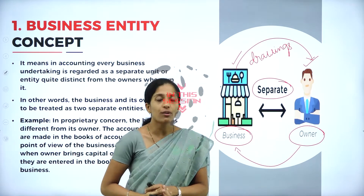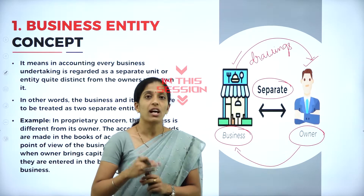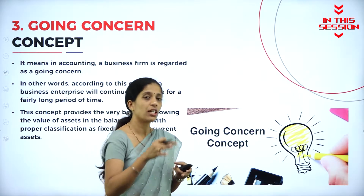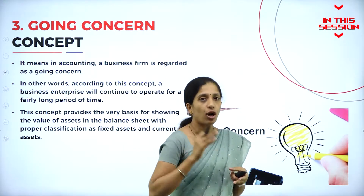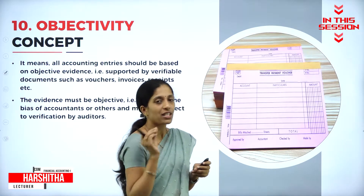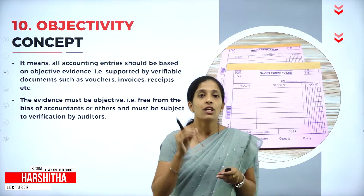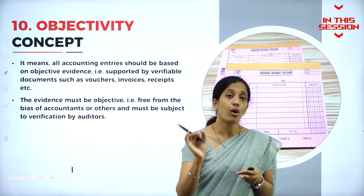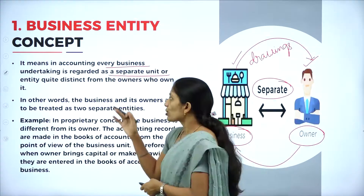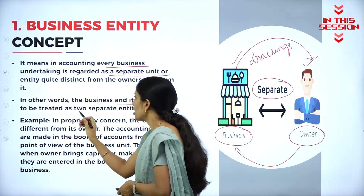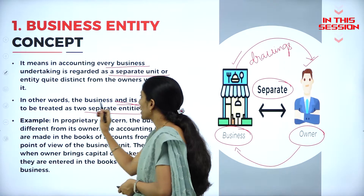Business and owner are not one and the same — they are two different entities. Whenever an owner starts a business organization, you always aim at long term. Whenever we are going to record each and every transaction in the books of account, it should have a proper documentary evidence in the form of vouchers. In other words, the business and its owner are to be treated as two separate entities.